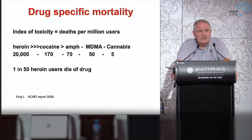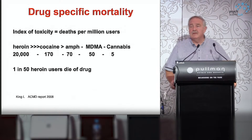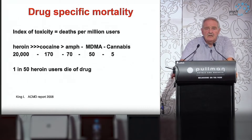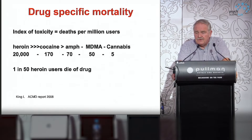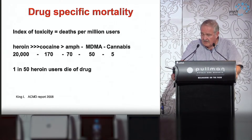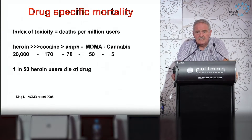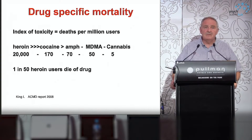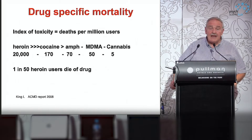Another way of looking at death is to look at the likelihood of any particular drug causing death. This was an analysis done by Les King, one of the key members of this committee. He estimated the likelihood of dying any time anyone used a particular drug and came to the clear conclusion that heroin — and fentanyl, which would now be categorized alongside heroin — is way, way more harmful. One in 20 people who ever use an opiate die of an opiate. Much more likely to kill you than any other drug.